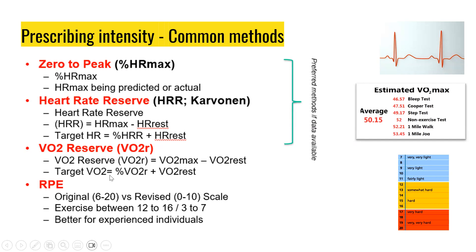The VO2 reserve method is very similar. You need VO2 max and VO2 at rest, which is a constant of 3.5 mL/kg/min. VO2 reserve equals VO2 max minus VO2 at rest. The target VO2 equals the desired percentage times the VO2 reserve, plus VO2 at rest. For the RPE method, we use the original 6-to-20 scale, where you prescribe exercise within a specific range of numbers on that scale.